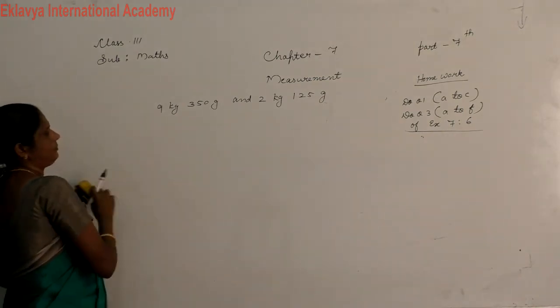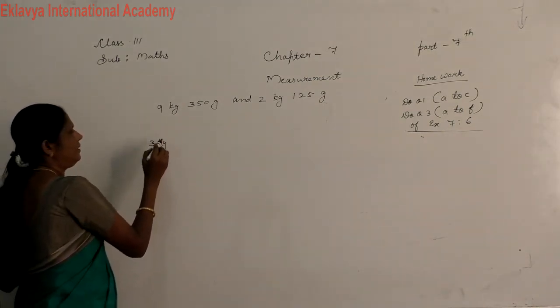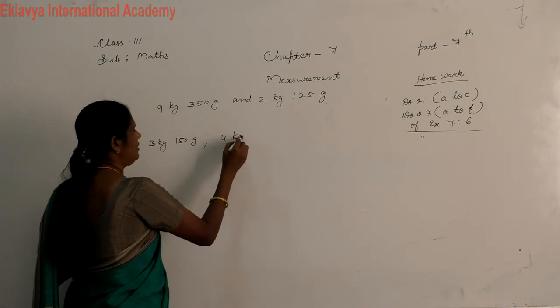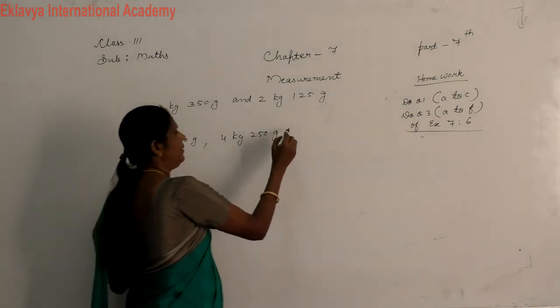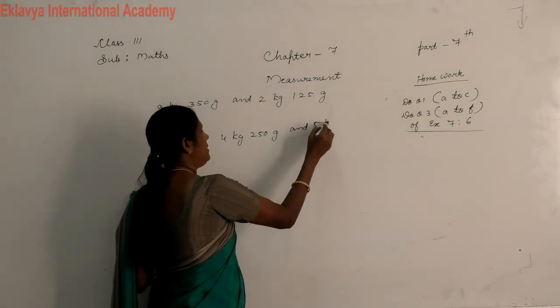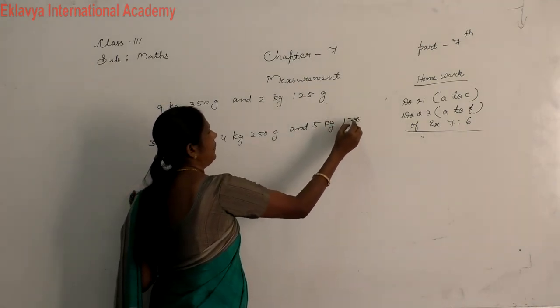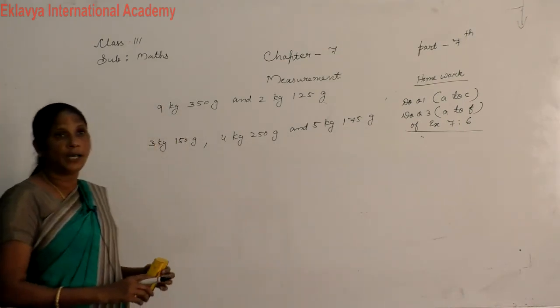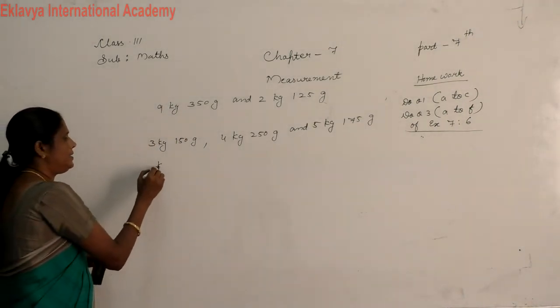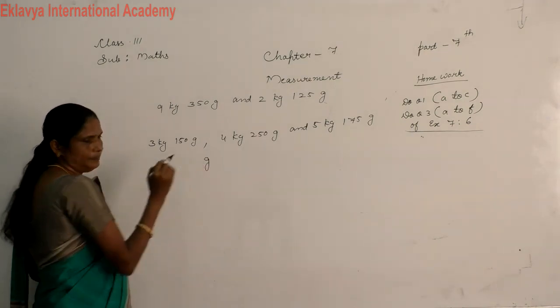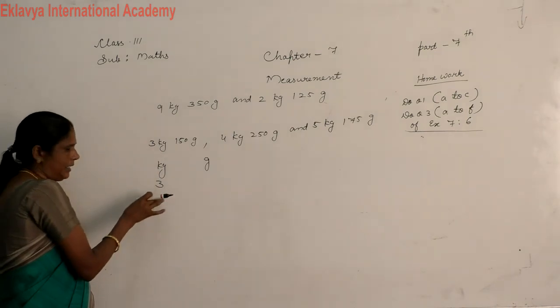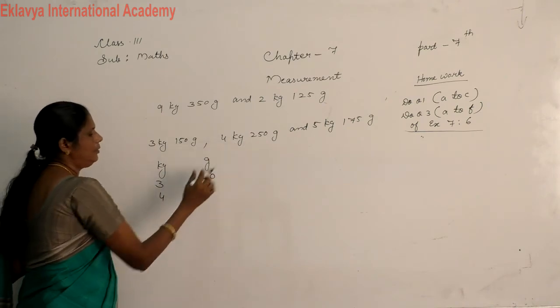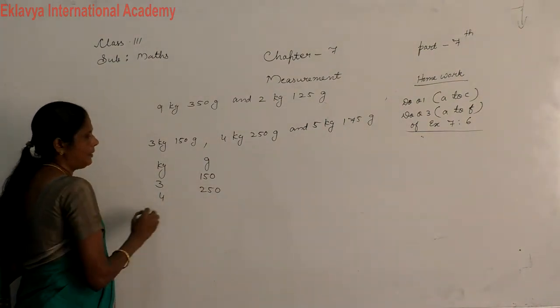Then, 1 more question. 3 kg, 150 gram, then 4 kg, 250 gram, then and 5 kg, 175 gram. Now, you arrange this number. Here 3 numbers. First, you arrange this column based, kg gram. Then 3 kg, you write 3 in kg, then 150 gram. Here 4, then 250 gram. Then 3 kg.